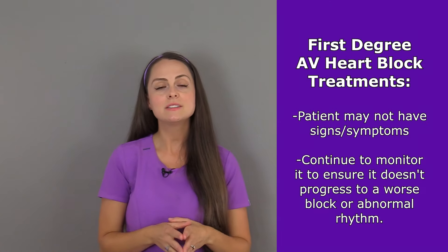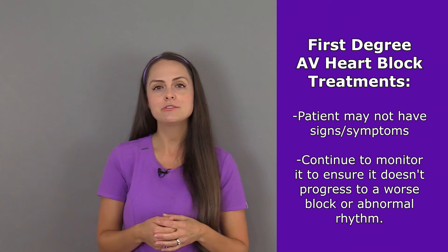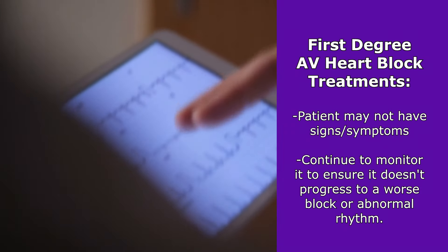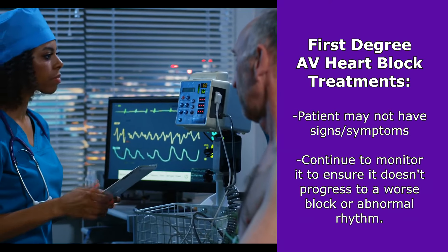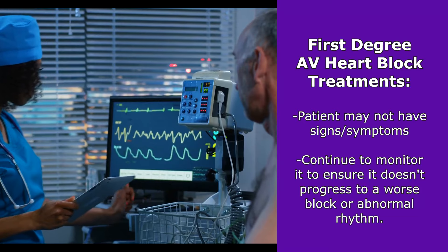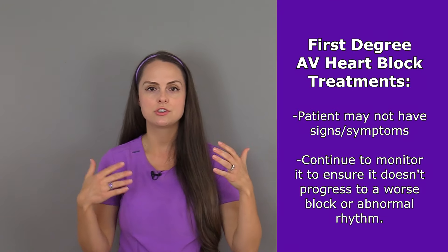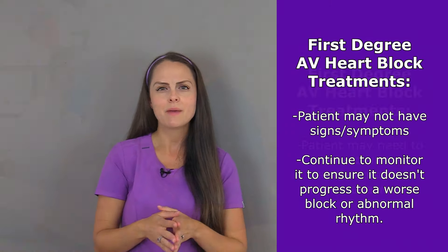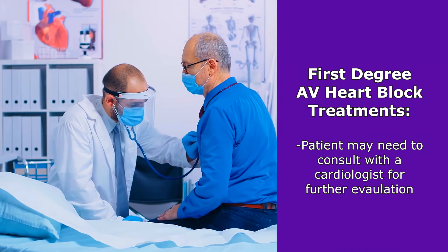What is the treatment for a first-degree heart block? Typically patients don't have signs and symptoms with this type of rhythm. Usually the only reason we know that a patient is in a first-degree heart block is because they had a routine EKG or were placed on a heart monitor where we could see the rhythm and that prolonged PR interval. We'll continue to monitor them, make sure they don't advance to another type of heart block or abnormal rhythm, and if the patient has an extensive heart history they may need to be further evaluated by a cardiologist.